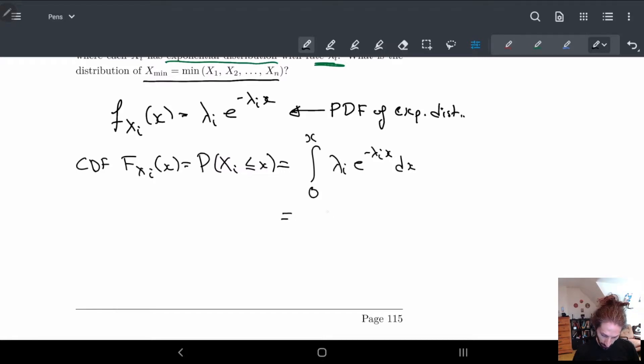So we have λᵢ e^(-λᵢx) divided by -λᵢ. That's what this derivative gives from zero to x. Plugging in zero, so plugging in x, so these λᵢ's cancel. So we get -e^(-λᵢx). Again I did this, this should be some other variable so we don't confuse them. This should be y's. We'll do y's. There we go.